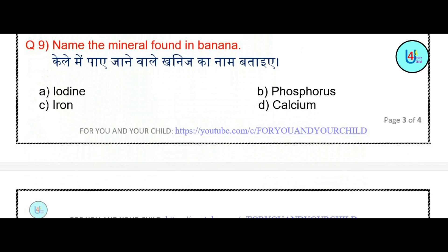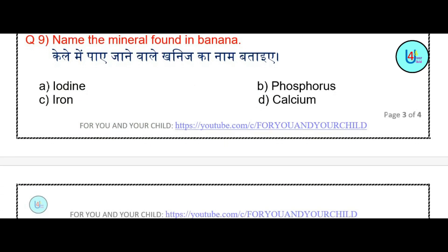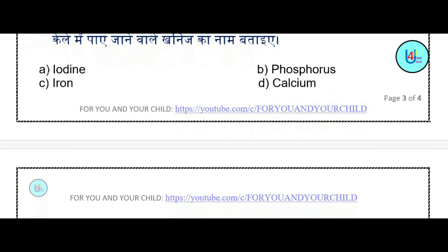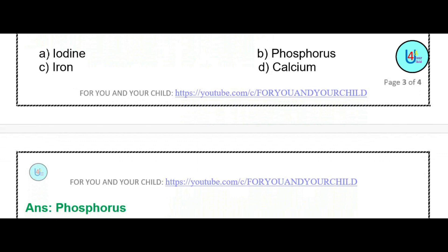Question number 9: Name the mineral found in banana — iodine, phosphorus, iron, or calcium? The correct answer is phosphorus.